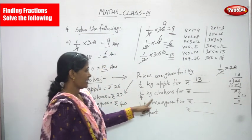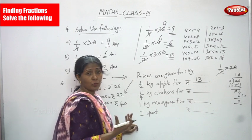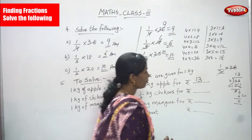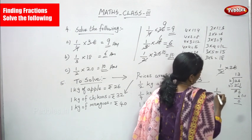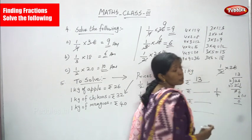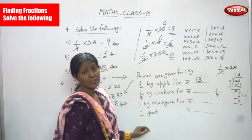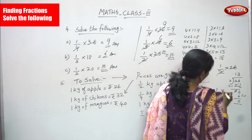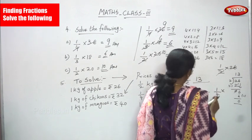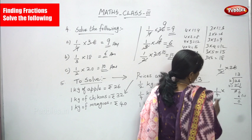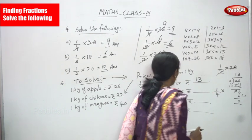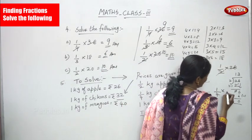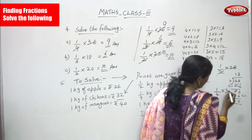The second part: quarter kg — that is 1/4 kg — of chikus. 1/4, quarter, and one-fourth are all the same. 1 kg of chikus is rupees 32, and we need to find quarter kg. So we write 1/4 × 32, meaning 32 ÷ 4.